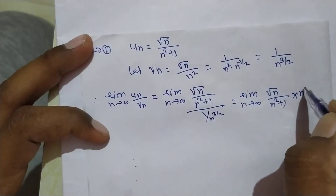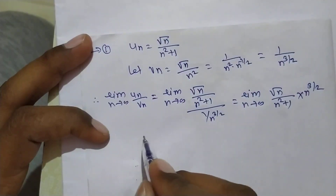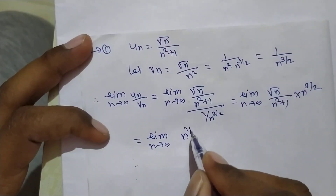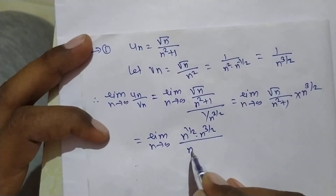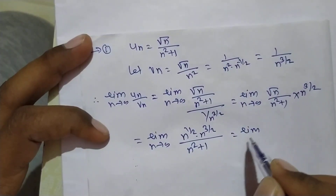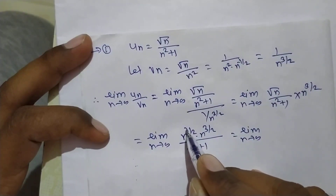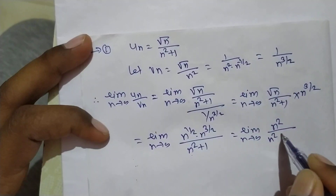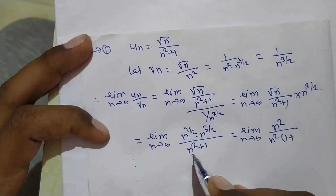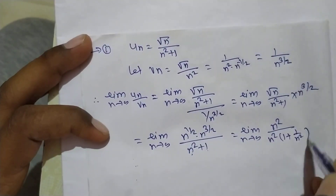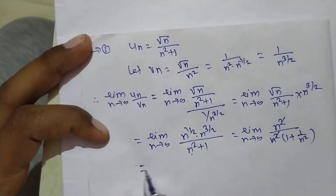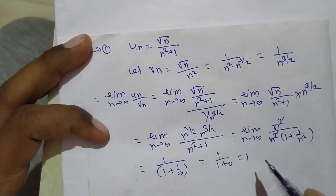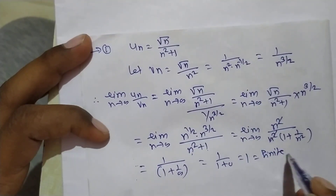Limit as n→∞ of un/vn = limit as n→∞ of [√n/(n²+1)] × n^(3/2) = limit as n→∞ of n^(1/2) × n^(3/2) / (n²+1) = limit as n→∞ of n² / (n²+1). Taking n² common from the denominator: n²/(n²(1 + 1/n²)) = 1/(1 + 1/n²). As n→∞, this equals 1/(1+0) = 1.